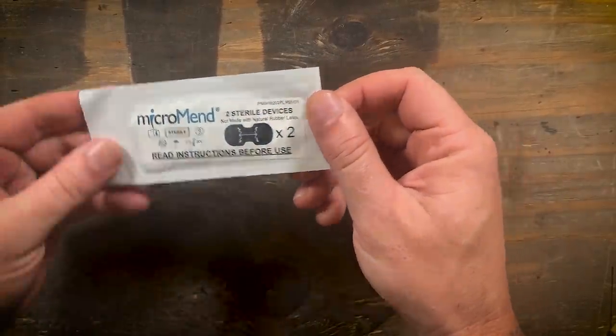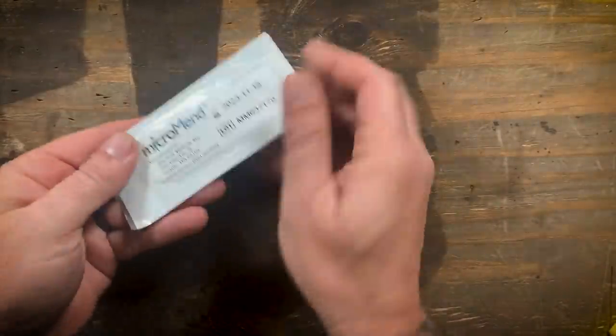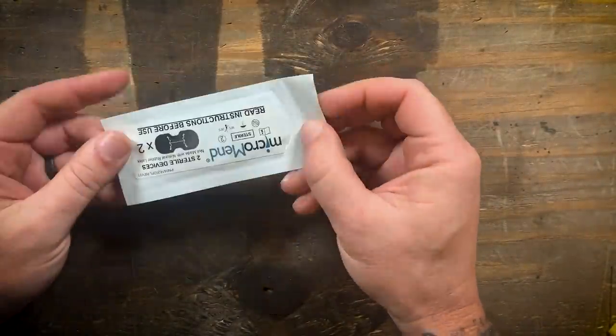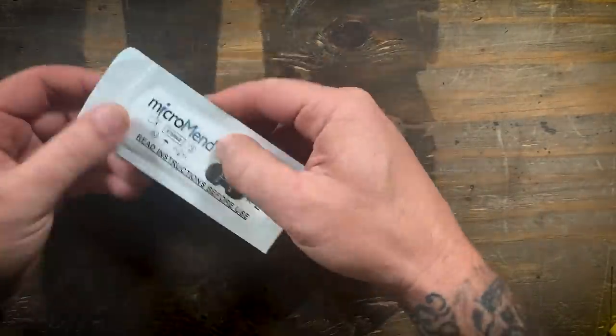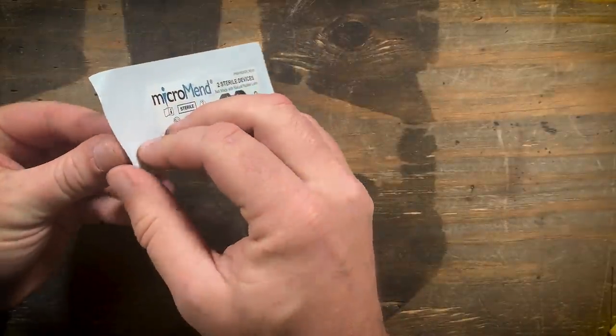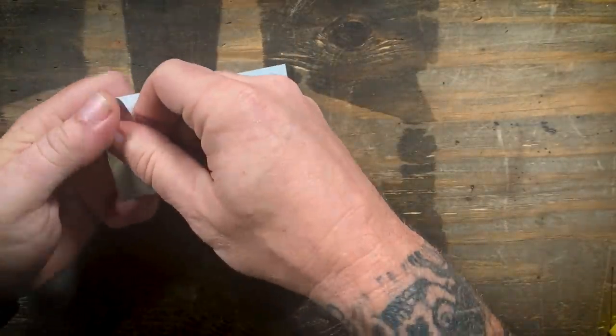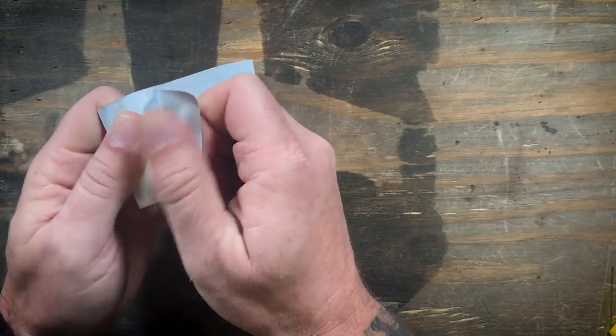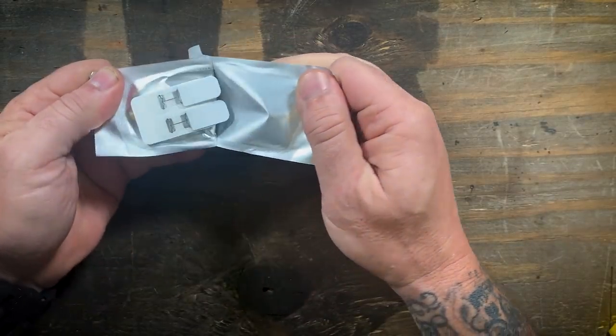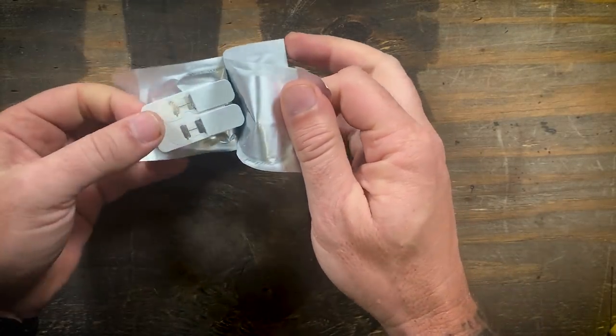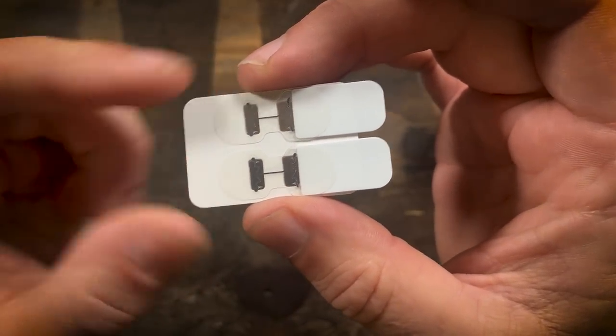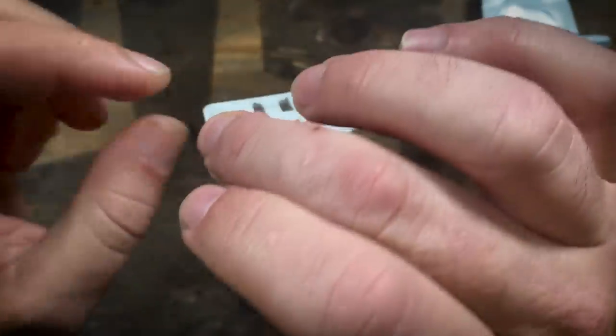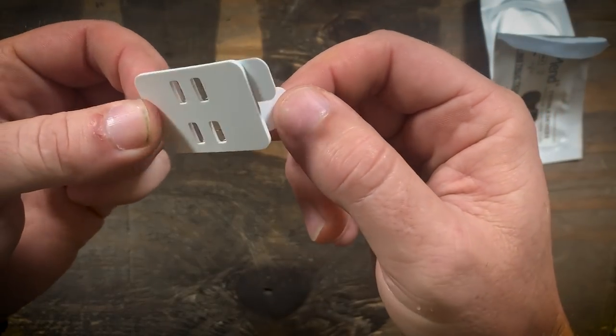So this is the Micromend, it's a really cool little flat easy to carry thing, be great to add to medical kits and it's in this sterile pouch or container. If you open this up there's two in there. So there's two sterile wound closure devices on this, it's kind of like a rubbery little pad right here and then you've got these tabs here.